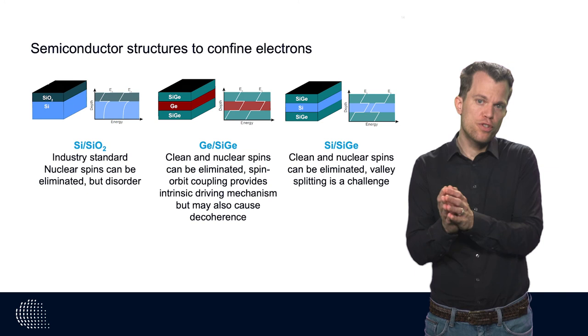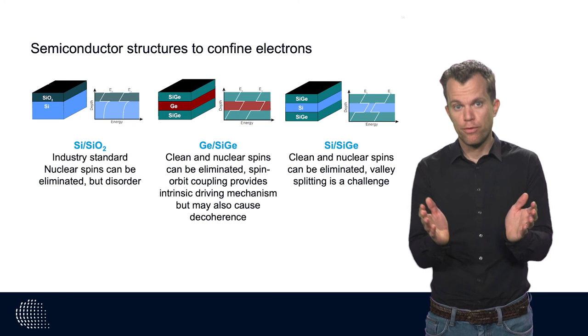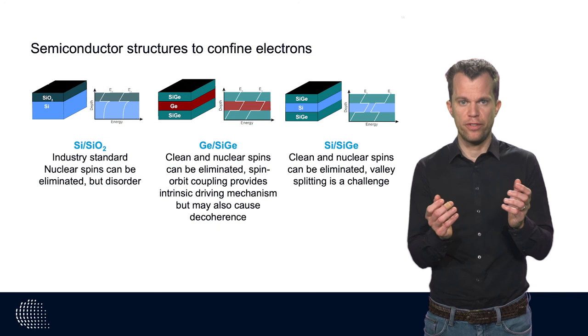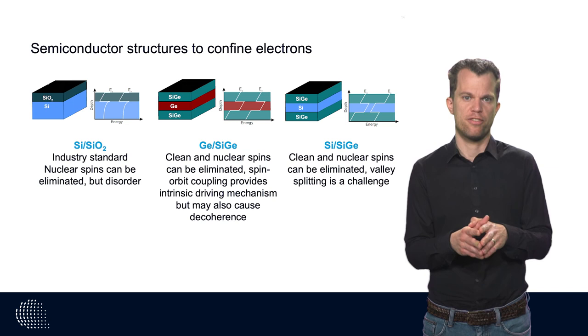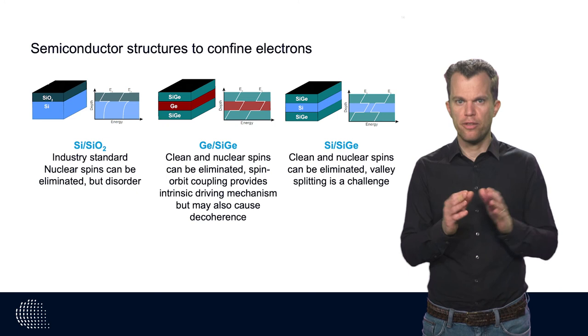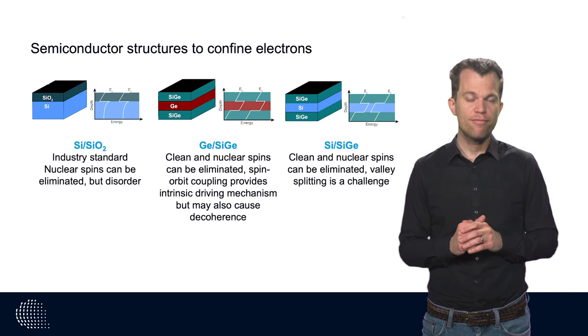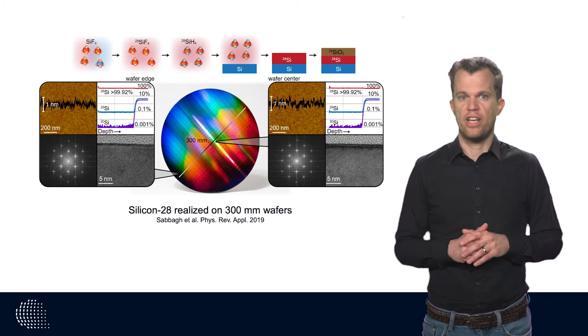By making use of holes instead of electrons, this interaction is heavily reduced. Holes are described by a p-wave function and as a result, the overlap vanishes. However, next to contact hyperfine interaction, there can also be other interactions, such as dipole-dipole interactions. While their influence may be minimized by choosing cleverly the magnetic field direction, finite dephasing due to nuclear spins remain. But fortunately, purified silicon and germanium can be made rather straightforward by industry.